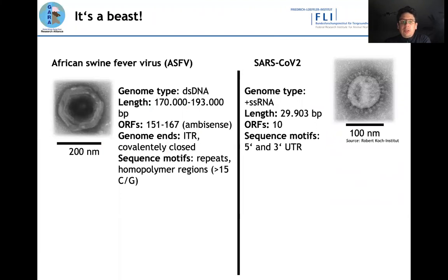When we talk about African Swine Fever whole genome sequencing, I'd like to point out the complexity we are dealing with. On the left I show you African Swine Fever, and on the right I compare it to SARS-CoV-2. You can see the difference in complexity — both the dimensions of the particle and the genome. The ASF genome is double-stranded DNA, almost six times the size of SARS-CoV-2, and has almost 15 times the open reading frames.